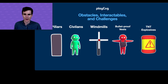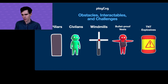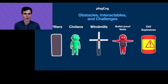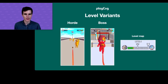Next we added obstacles, interactables, and challenges. Pillars and civilians were already in the game — pretty static. We added windmills as dynamic obstacles: enemies positioned behind them so you have to time your flight through and hit the enemy. Bulletproof vest enemies require a bit more accuracy. And TNT explosive barrels are the interactables — hitting them lets you kill multiple enemies at once. We'd seen these work in other games, so we went with it.